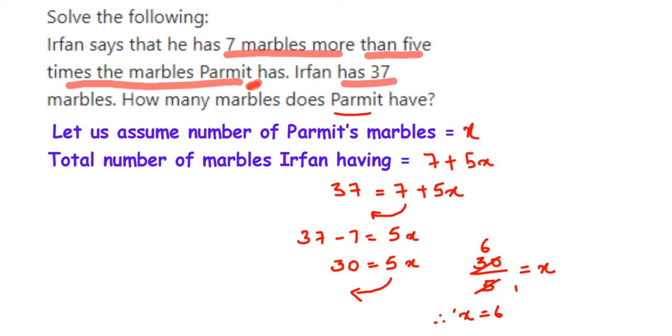If x is equal to 6, this means that the number of marbles Parmit has is equal to 6. Therefore, Parmit has 6 marbles. That's it. I hope this question is clear. In case you have any other question or doubt, you can drop a comment. Thank you so much for watching.